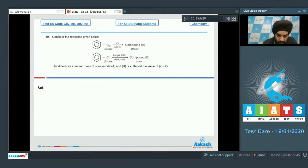Let us look at the next question now, question number 39. Consider the reactions given below. We have been given the reactions of benzene. In the first reaction, benzene is allowed to react with chlorine in presence of UV rays. If I talk about compound A which is formed, in the presence of UV rays, benzene is going to get chlorinated.